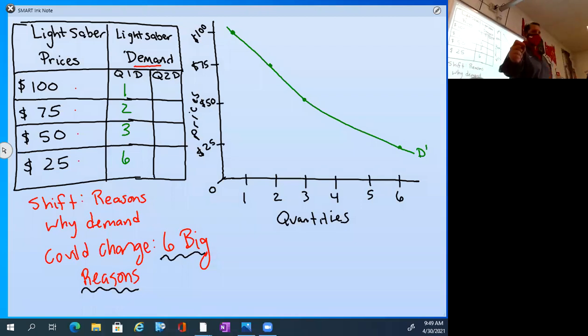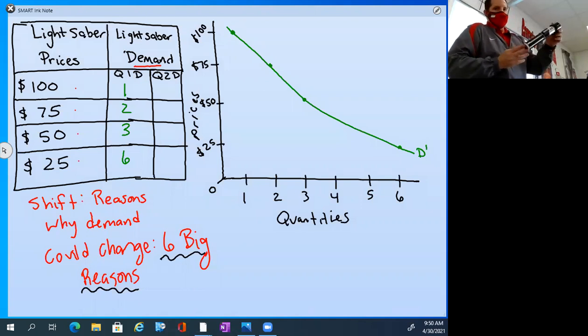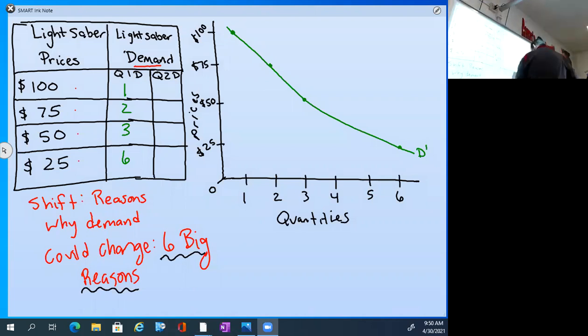You also learned yesterday, and you know this, that the law of demand, as prices go up for the product, your demand is going to go down, right? You're not going to want to pay more at a higher price or buy more of the product. Your demand is not going to go up for the product as price goes up. Your demand will go up for the product if the price goes down. That's the law of demand. Therefore, on your screen, that's why you have a downward slope demand curve, right? And we can see it in our chart, and we can see it in our curve.